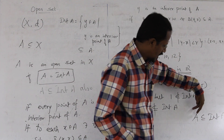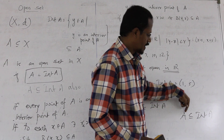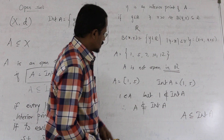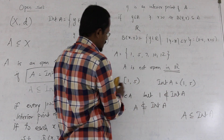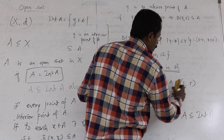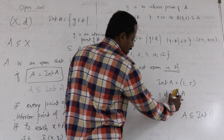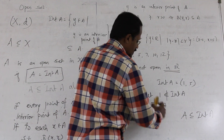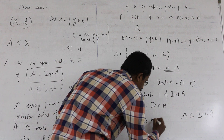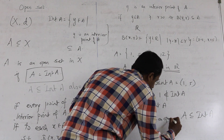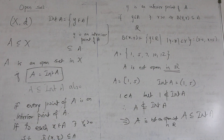When we say A ⊆ interior(A), every point of A must be an interior point of A. But here we have at least one point of A — namely the point 1 — which is not an interior point of A. So A is not a subset of interior(A), and therefore A is not an open set in R.